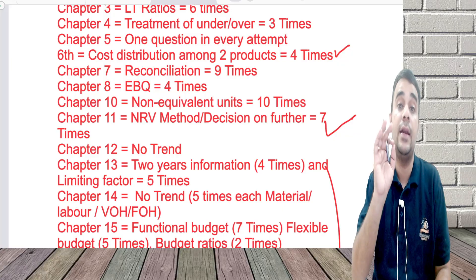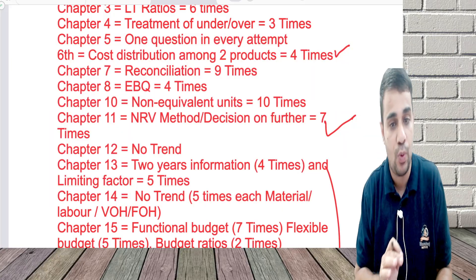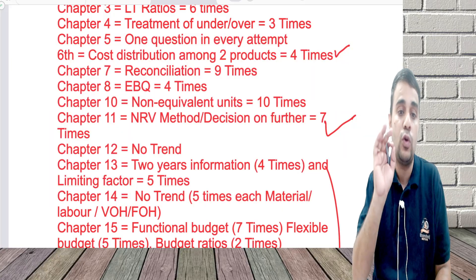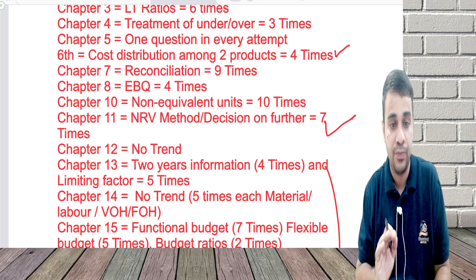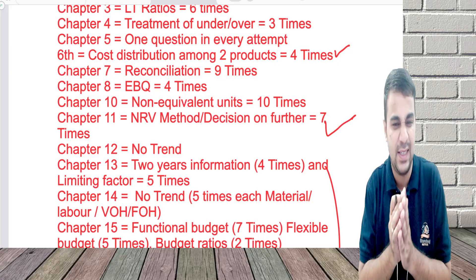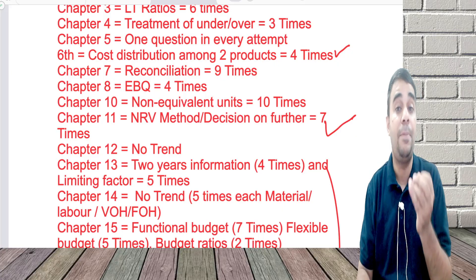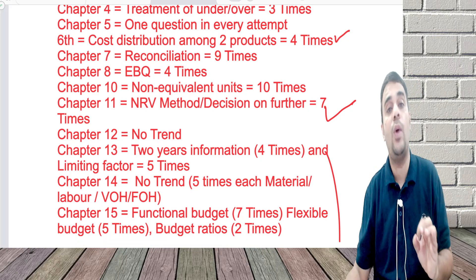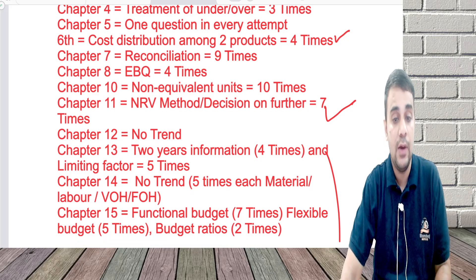Chapter 8: understand how Economic Batch Quantity is calculated — it has come four out of six times in the exam. Chapter 9 has not been tested very much, so I have not mentioned anything specific for it.